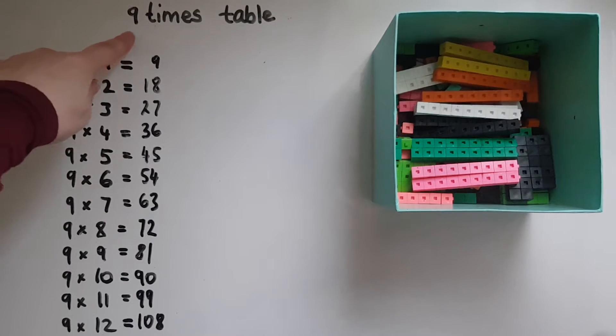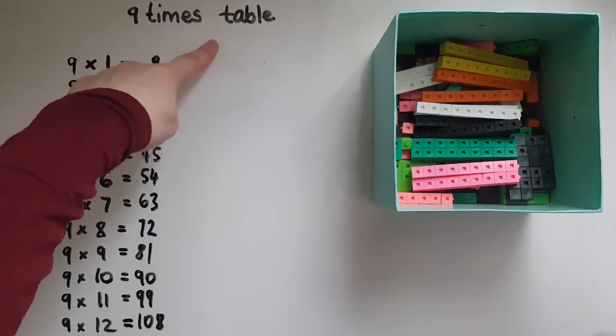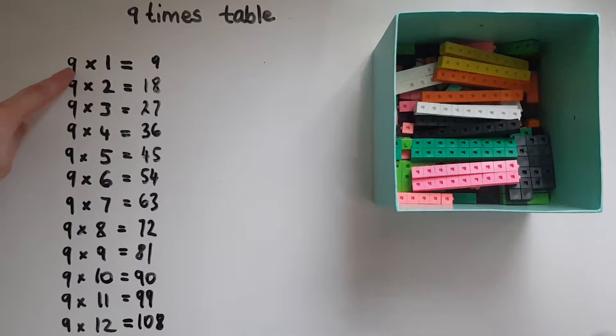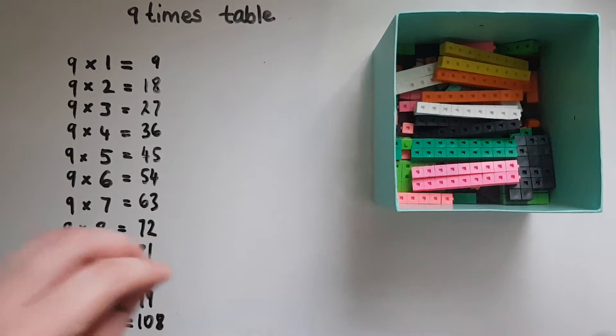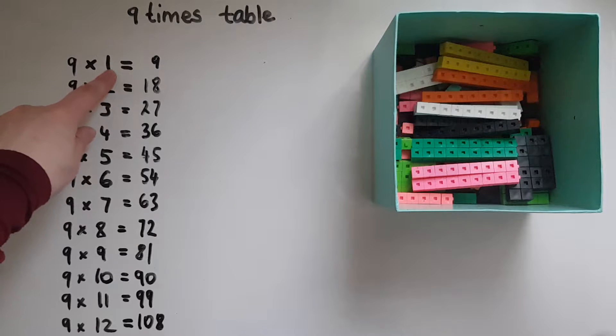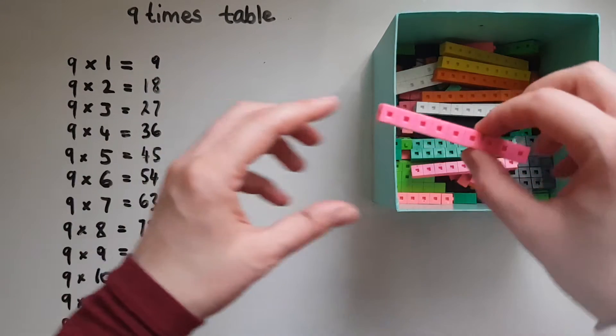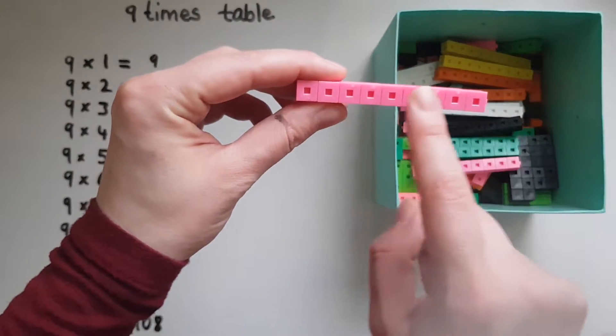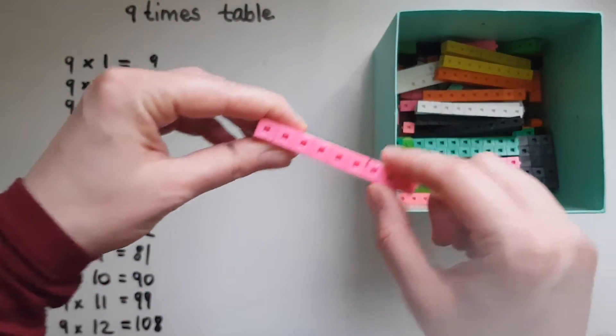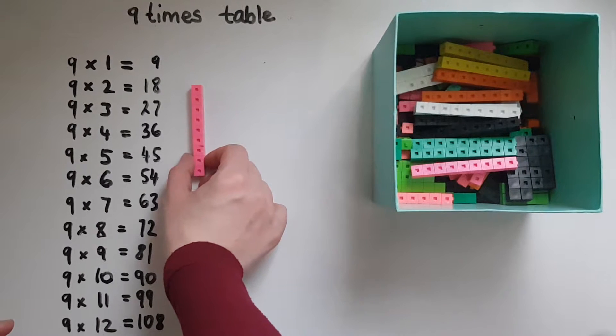So as the name suggests, we say 9 times. If I put my hand in this box 9 times and get one cube each time, I'll end up with 9 in total. So 9 times 1 equals 9.